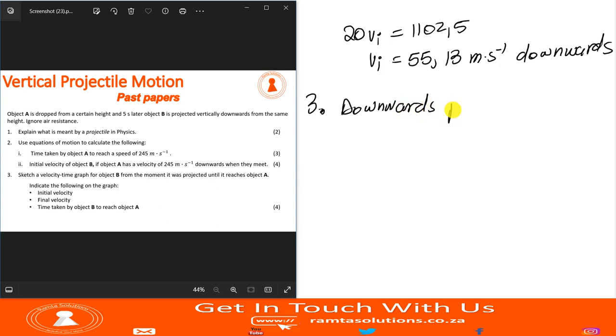I'm going to say downwards being positive, of course, like we've been saying all along in this question. So I'm going to use the formula VF equals VI plus A delta T. This is the final velocity. I don't know what it is. What is the initial? It was 55.13.